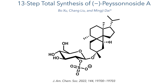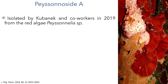This work was published in JACS by Bo Xu, Chang Lu and Ming-Jie Dai in their paper '13-step total synthesis of Pasonoside A'. This compound was first isolated in 2019 by Kubanek et al. from the red algae Pasonelia.